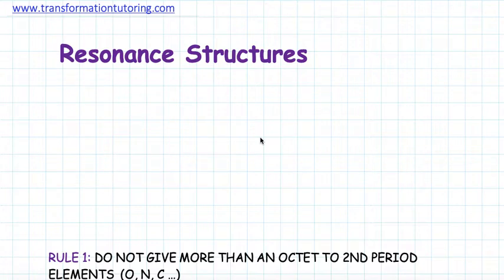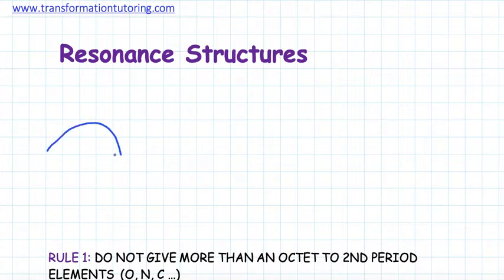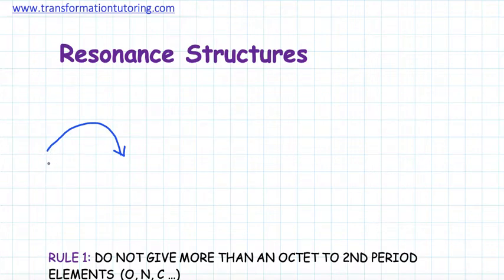How do we draw our resonance structures? In order to do so, we must first learn how to draw arrows. The arrow we use is called a curved arrow, and it has a tail and a head. It basically symbolizes where electrons are going — the tail is where electrons are coming from, which means that place must have extra electrons to give.